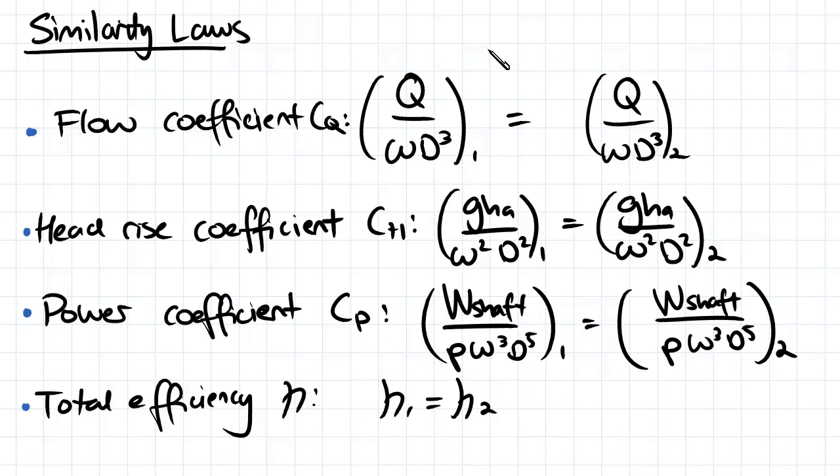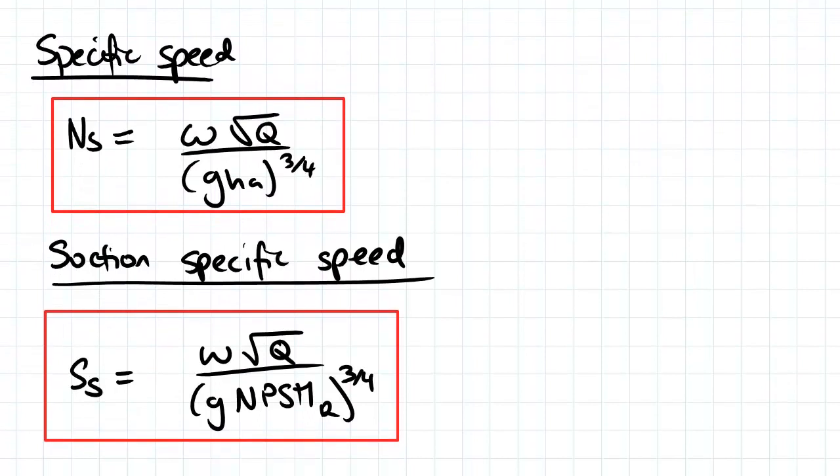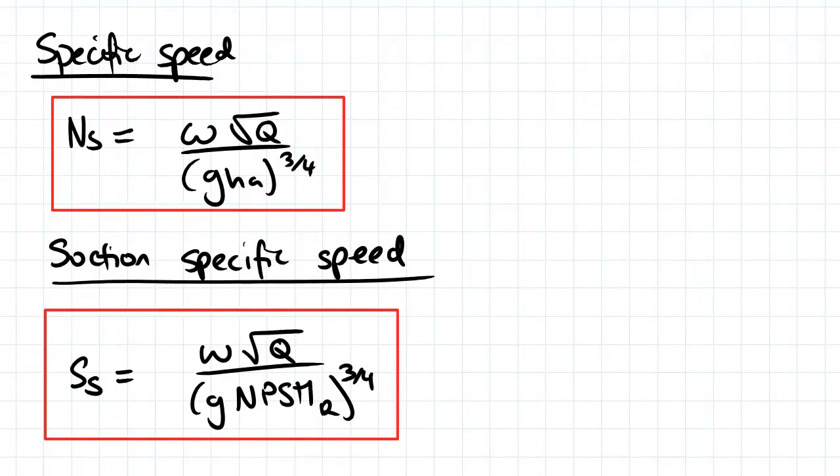So we can use these when we're comparing a model pump to a prototype pump and vice versa. The last two equations that you need to know are your equation for specific speed, which is ns is equal to angular velocity.